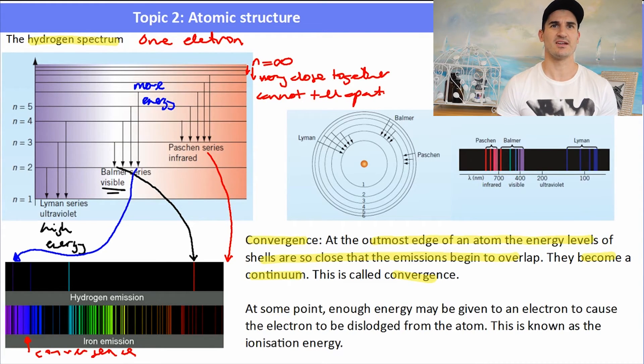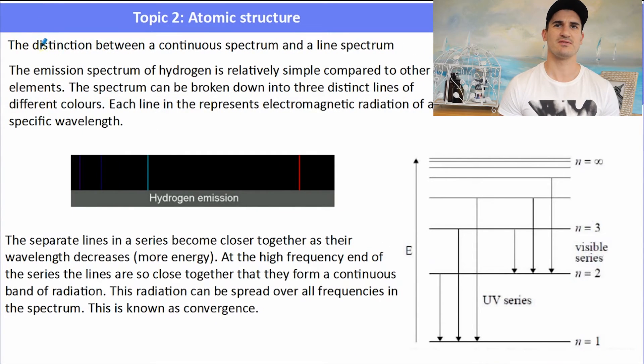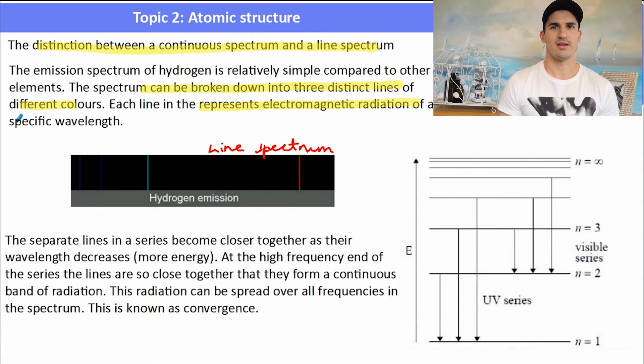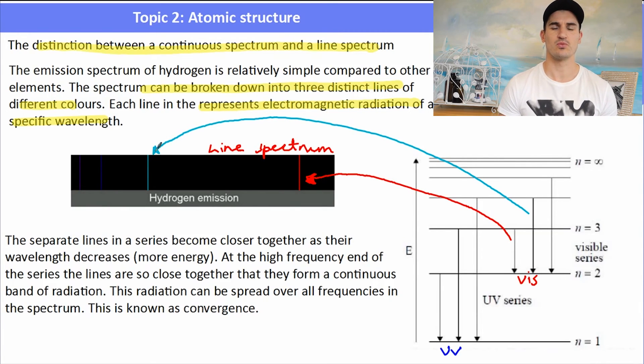We need to make the distinction between a continuous and a line spectrum. The emission spectrum of hydrogen, it's relatively simple compared to the other elements, because it only has one electron, and it's broken down into three distinct colors. Each line represents radiation of a specific wavelength. That is a line spectrum, and it's really clear that we have a red, a sort of teal color, and a blue color. Remember that any electron returning to the first electron shell will be UV, and any electron returning to the second electron shell will be our visible. The smallest one going from the third shell to the second shell is probably our red. From the fourth shell to the second shell, that's going to have more energy, so that's like that teal color. And then from a shell further than that, returning to the second will give us our blue.